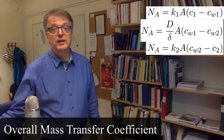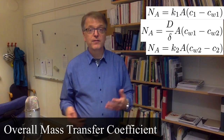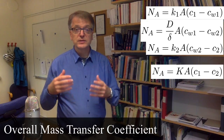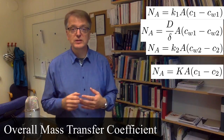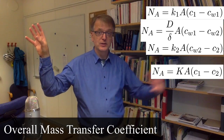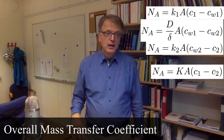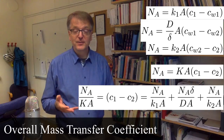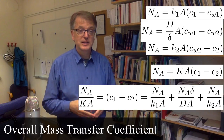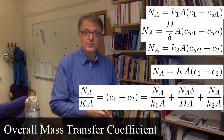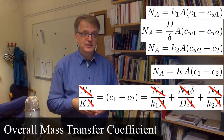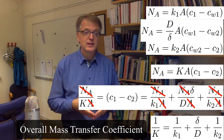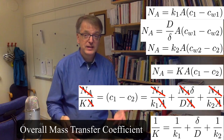Just as with heat transfer, we can define an overall mass transfer coefficient using an equation where Na equals large K times the area times the concentration from one medium in the bulk to the other medium in the bulk. If we have steady state, Na has to be the same throughout, and if you have the same area all over, you can rearrange this and get the same kind of equation as for overall heat transfer coefficients.